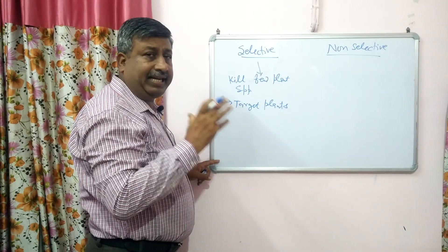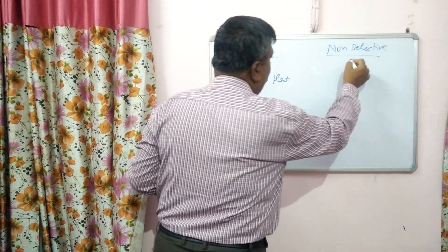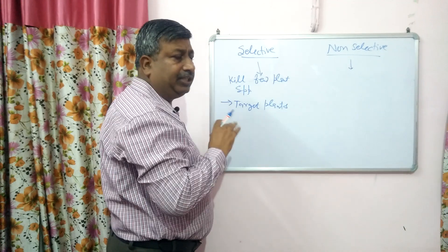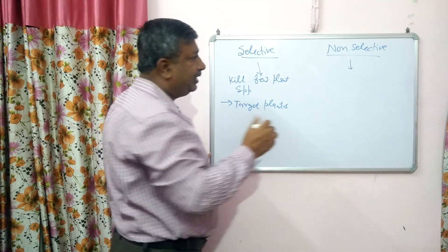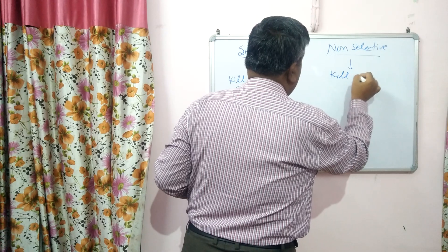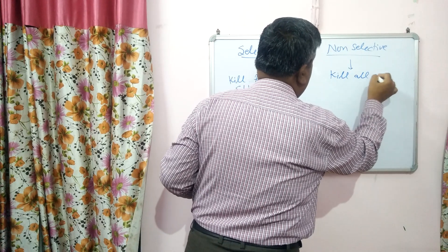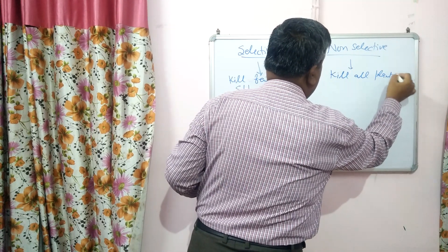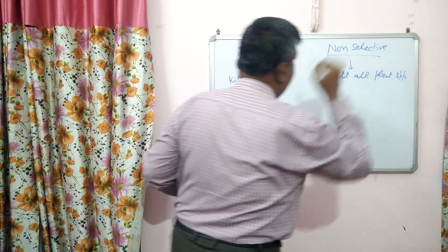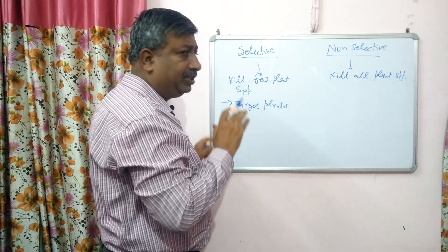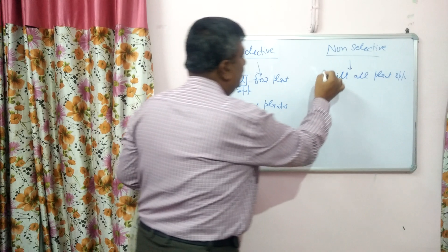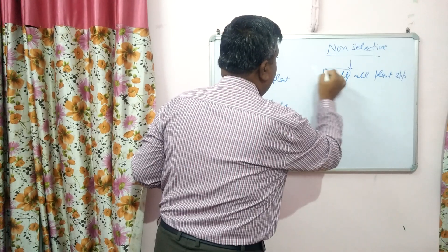Action is selective. In the case of non-selective herbicides, there is no selection. If they are applied, they kill all types of vegetation, kill all plant species — so there is no selection. This is the basic difference. The difference is in the killing action or the effect.